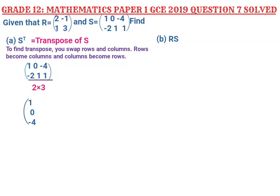I write negative 2 there, then 1 down and then 1 down again. Now I have written the transpose of matrix S — S transpose. I have changed matrix S into matrix S transpose.